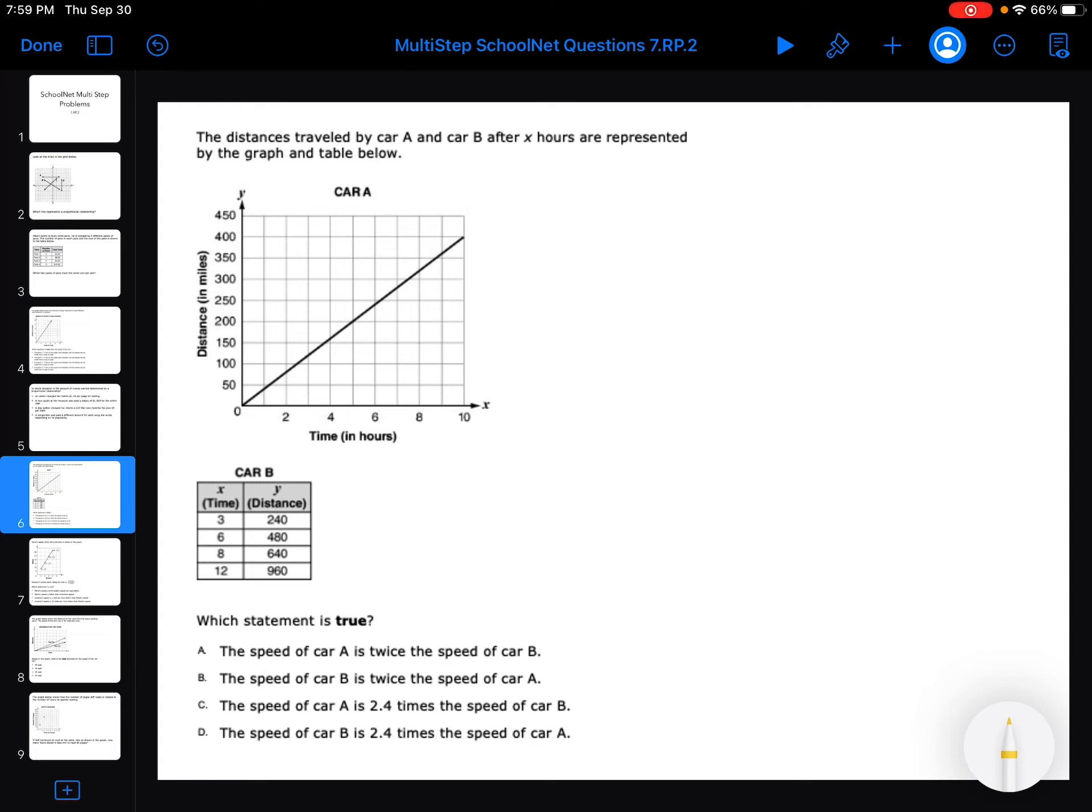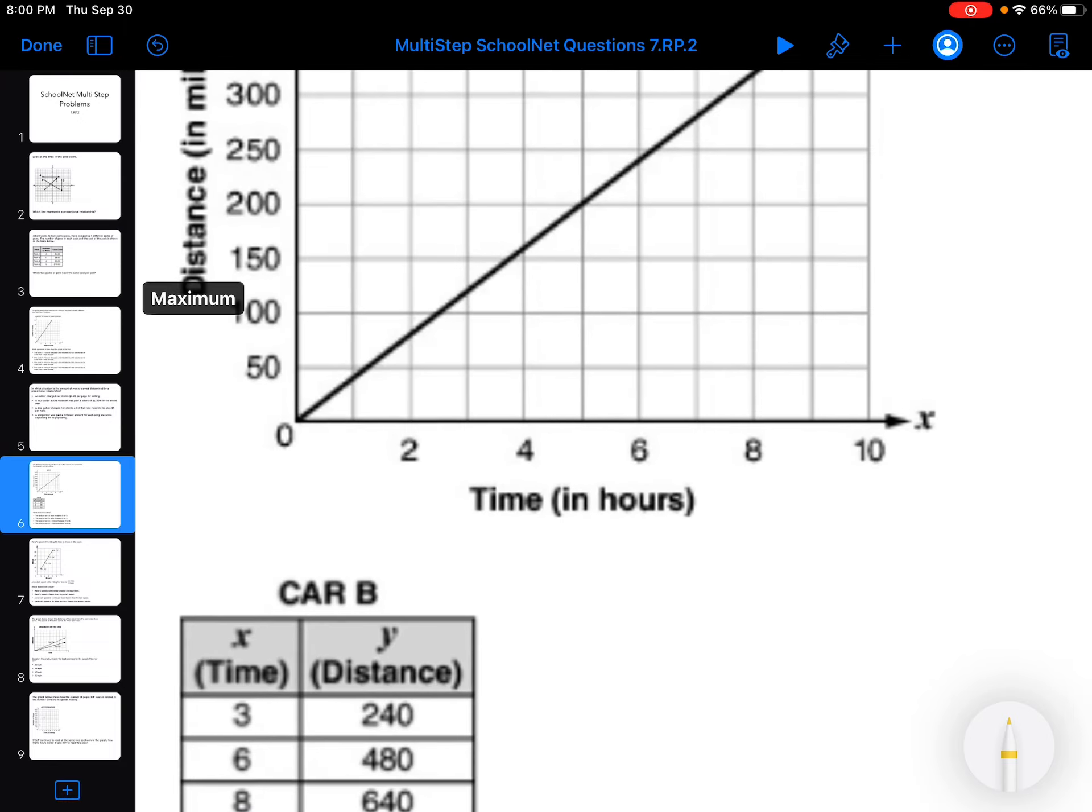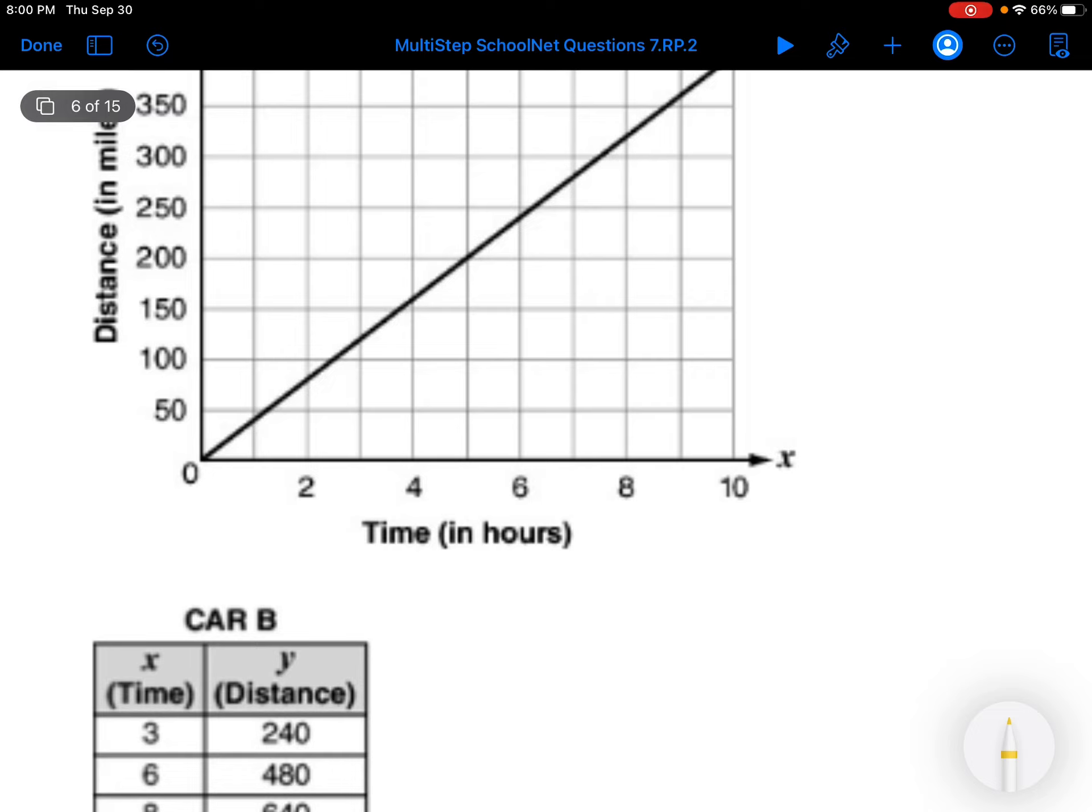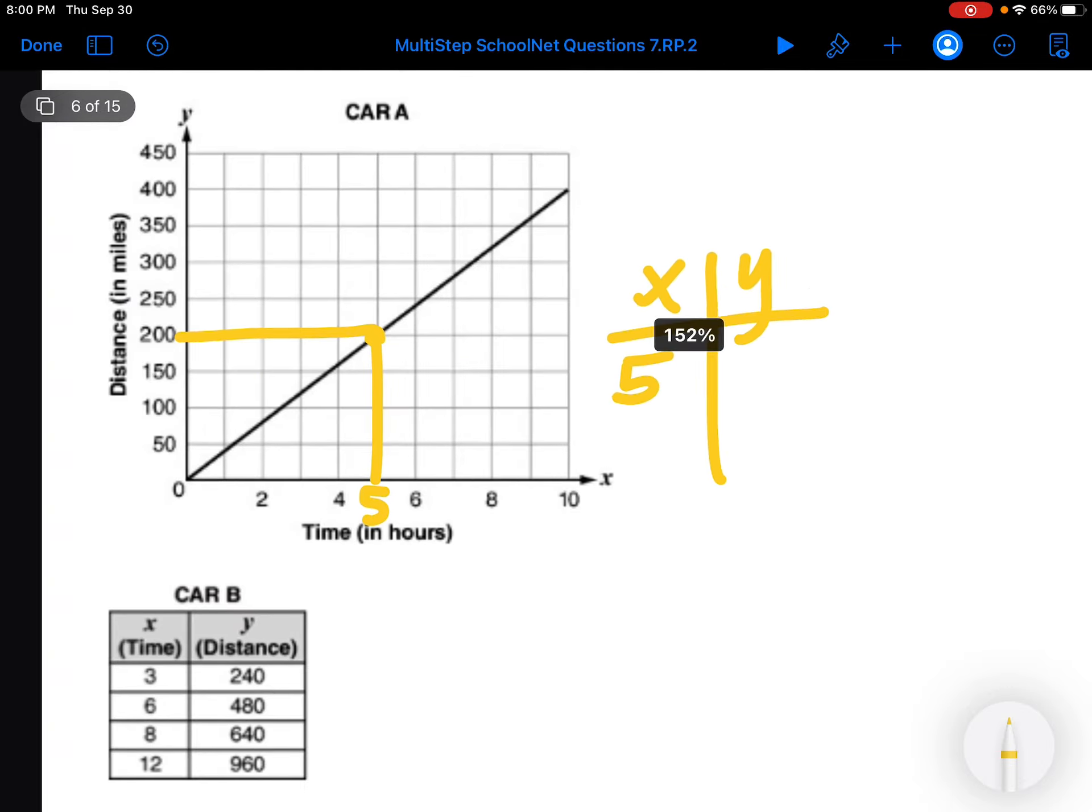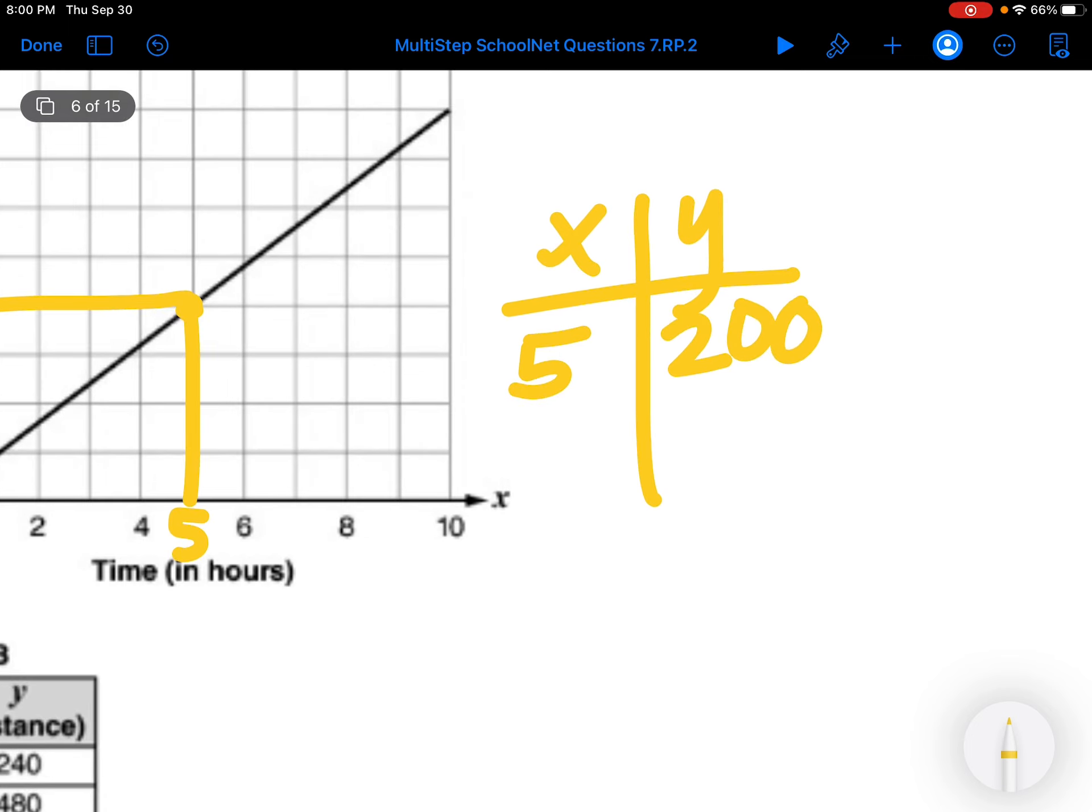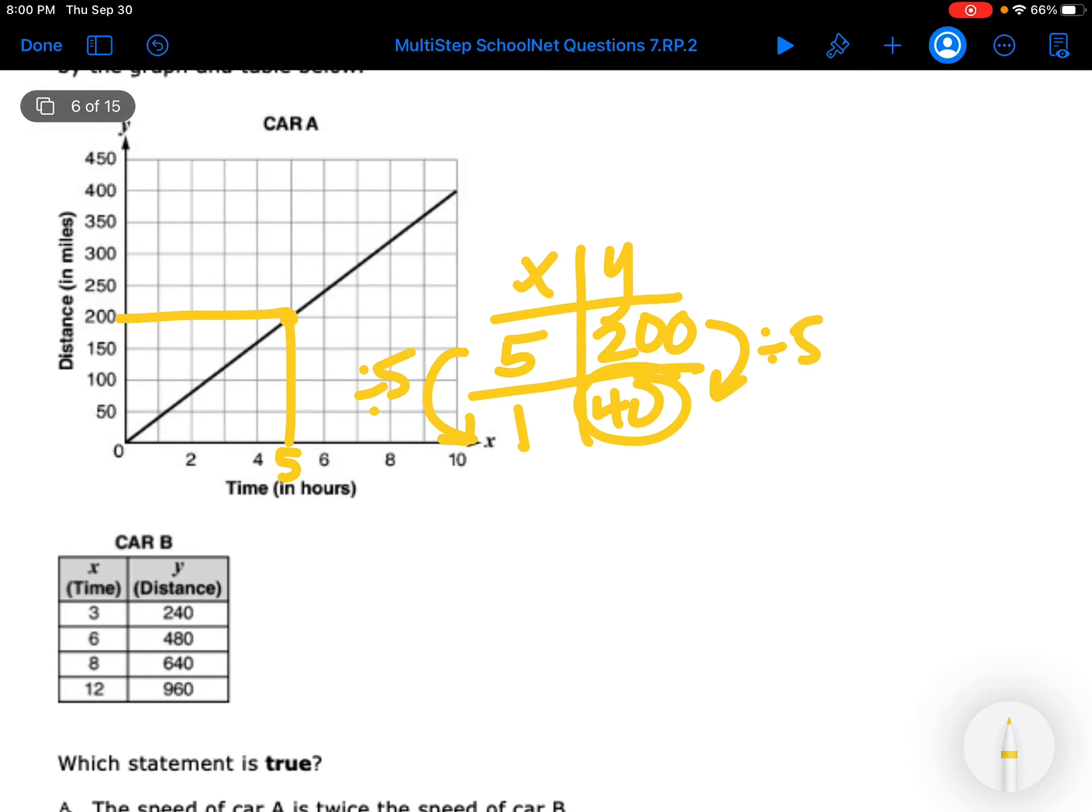The distances traveled by car A and car B after X hours are represented in the graph and in the table. Which statement is true? So I have to find the amount for one. So I have to find a point on the graph where it's in the crosshair, where it's right there in the corner. So that's going to be X, Y. So it's going to be 5 and 200. I want to find for one. I get 40. So this car goes 40 miles in one hour.